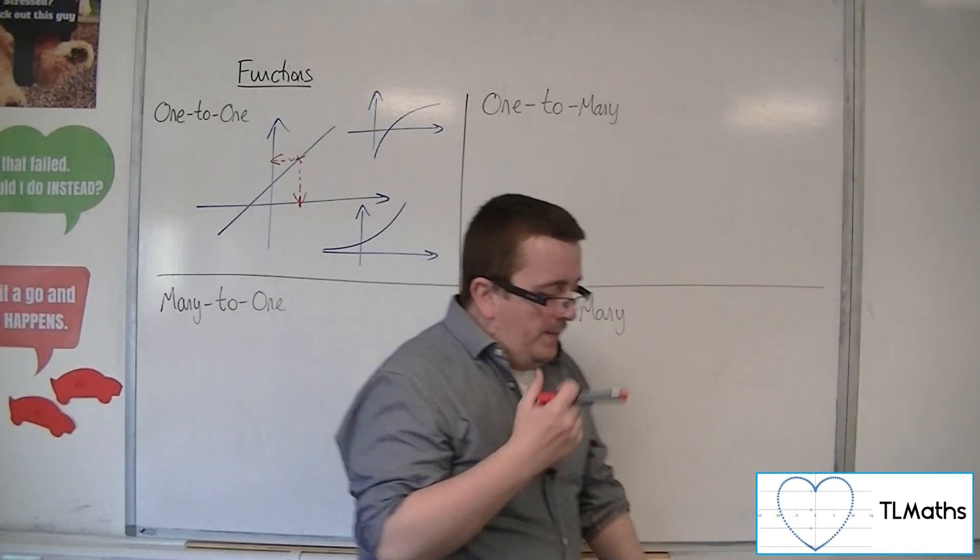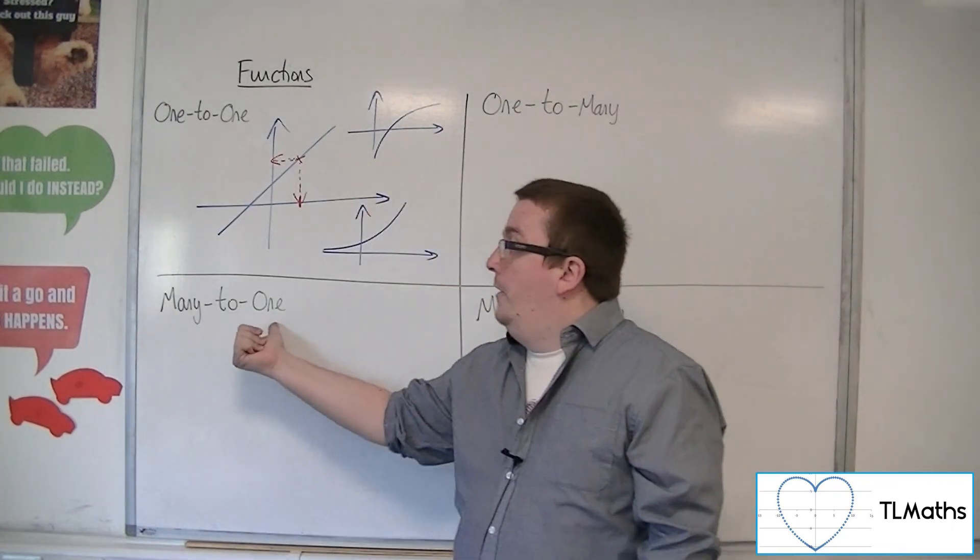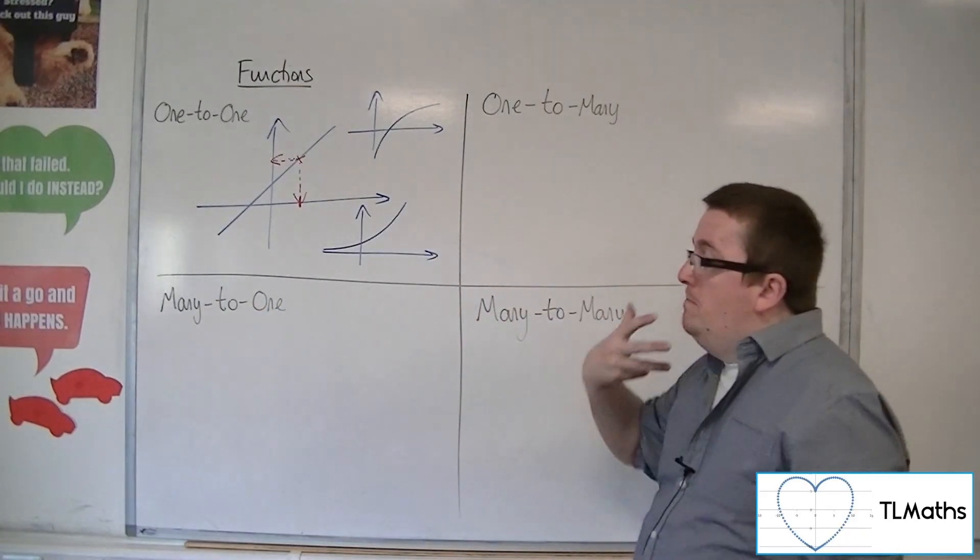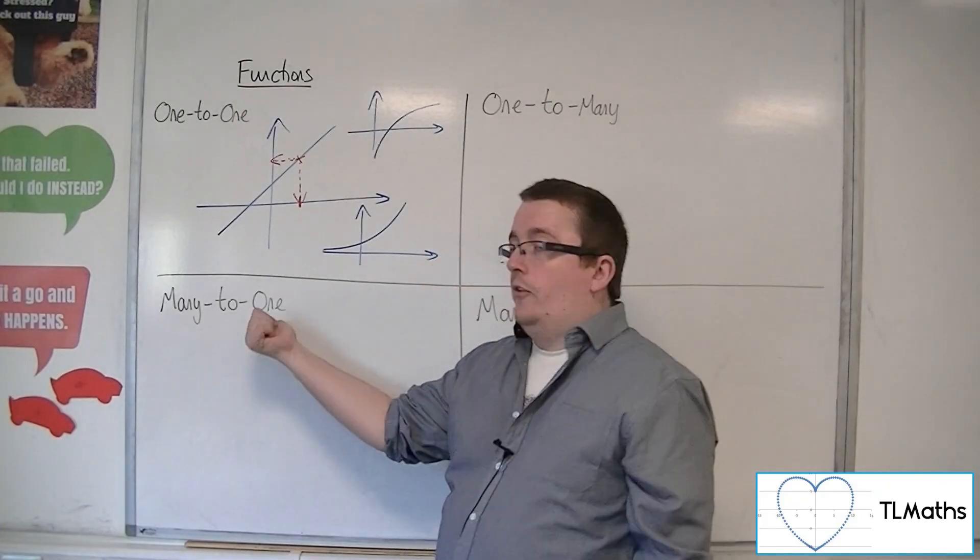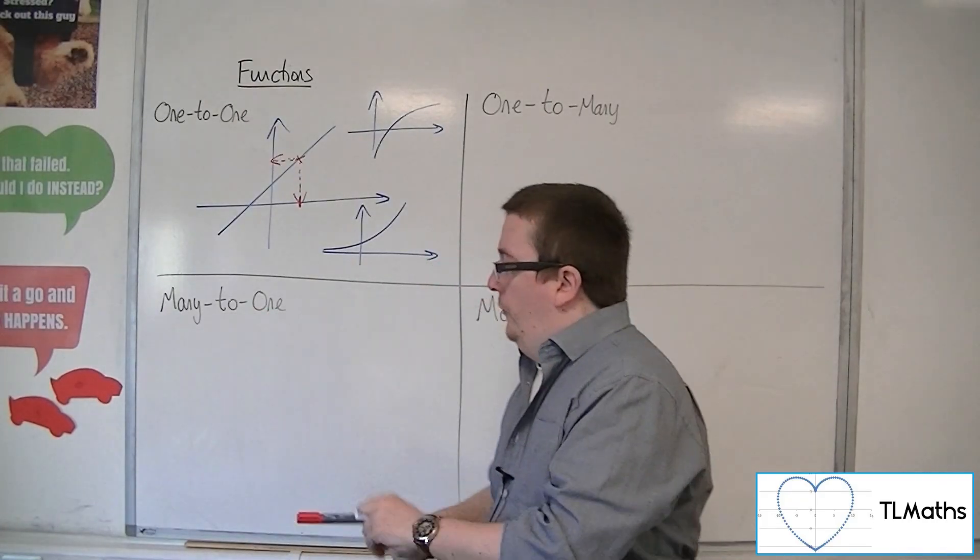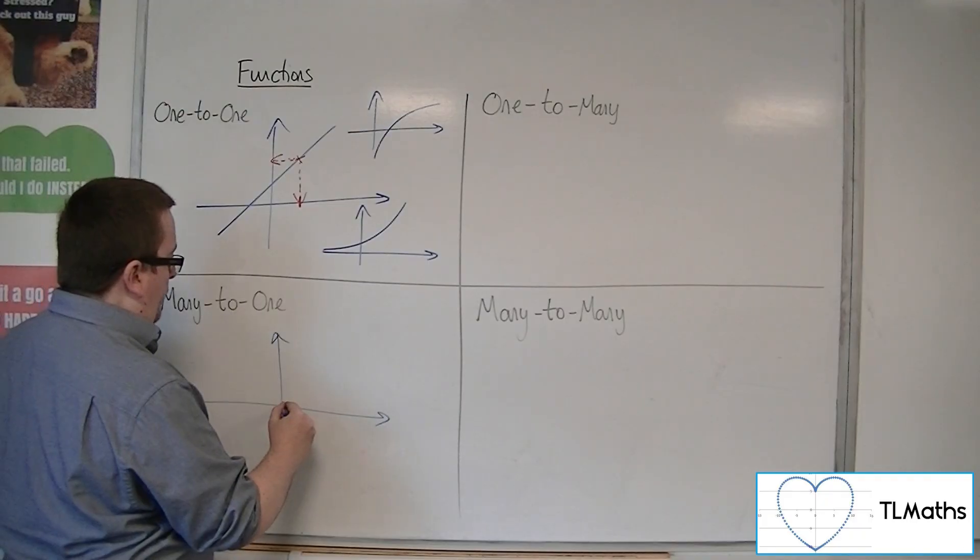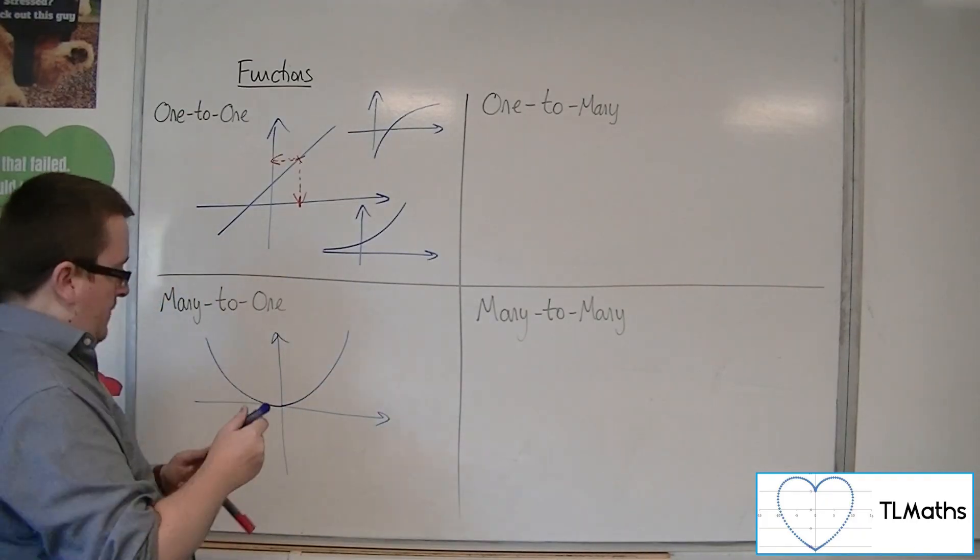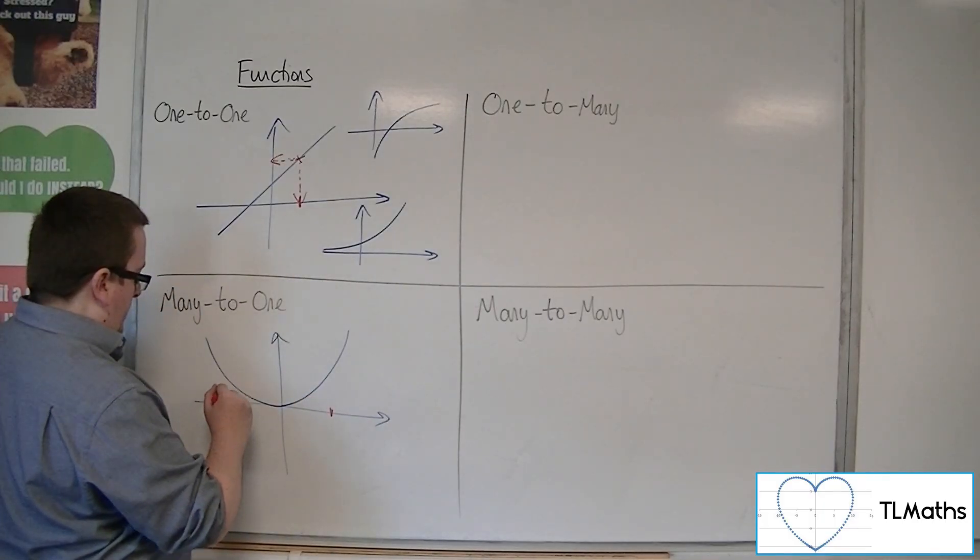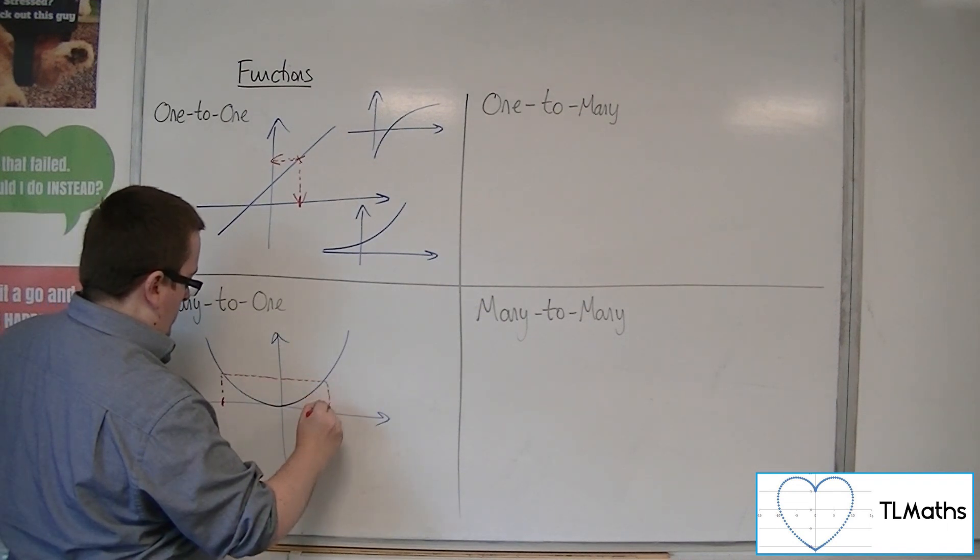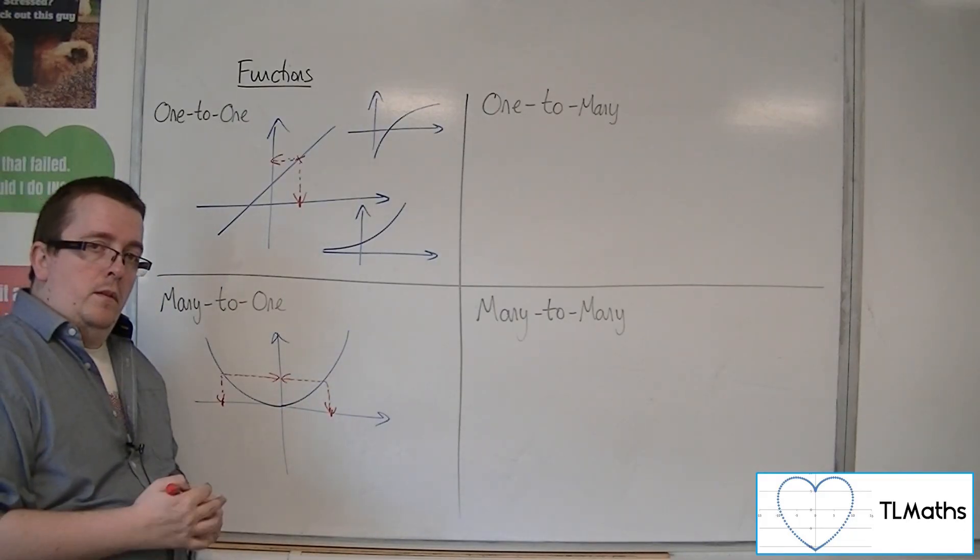So many-to-one. What does that mean? That means there are many values of x that will give me one value of y. There can be two or more values of x that could give me the same value of y. What that would mean could be a curve like y equals x squared, where I could have two values of x that both give me the same value of y.